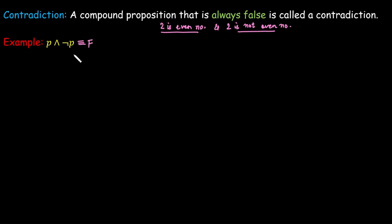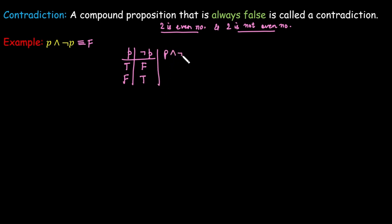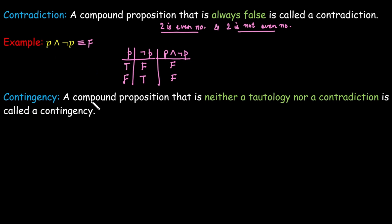We can verify this with a truth table. If P is true, negation P is false; if P is false, negation P is true. The AND operator is true only when both operands are true. In both cases here, they are never both true simultaneously, so the result is always false. The statement 'P AND negation P' is therefore a contradiction.